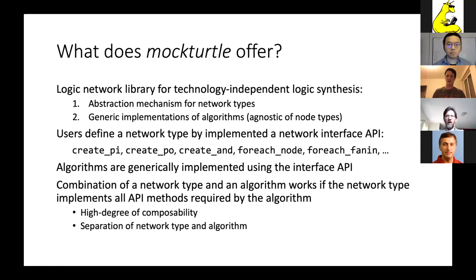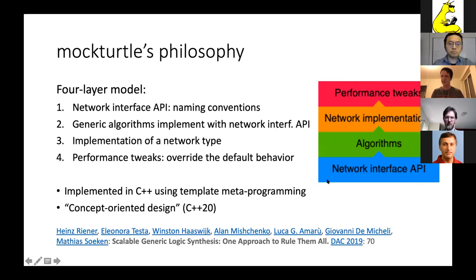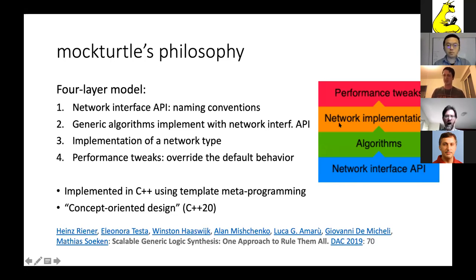This gives a very high degree of composability — you implement the logic synthesis algorithm once and it works for all network types that follow the naming conventions and implement the required API methods. You get a clean separation of network type and algorithm. Here is a four-layer model: at the bottom is the network interface API layer — naming conventions, just a textual description. On top of that you write an algorithm using those methods. Then you write network implementations that implement the network interface API, and you combine them.